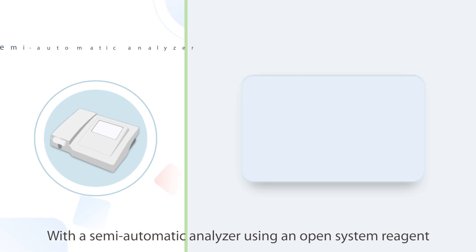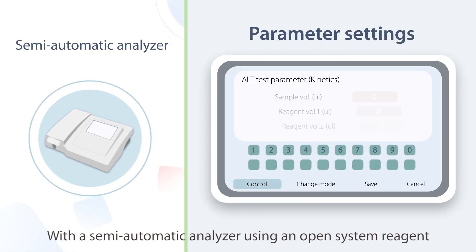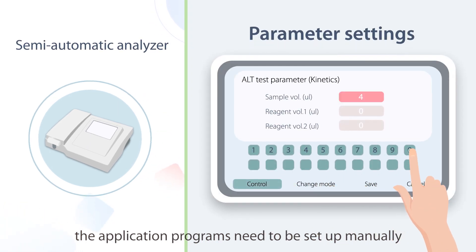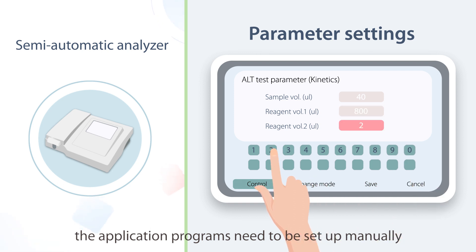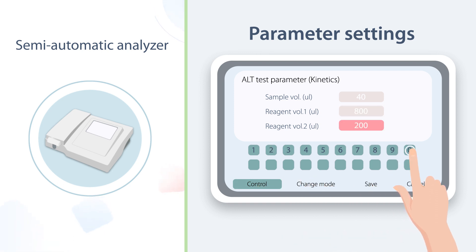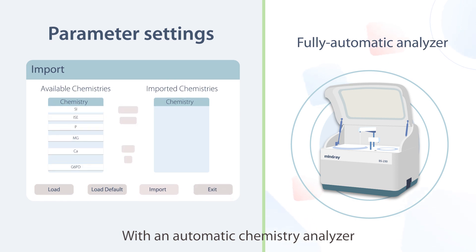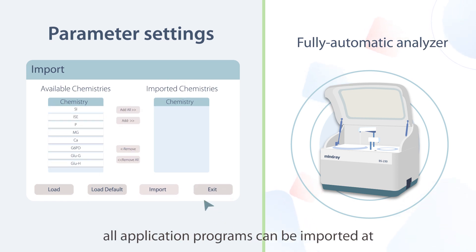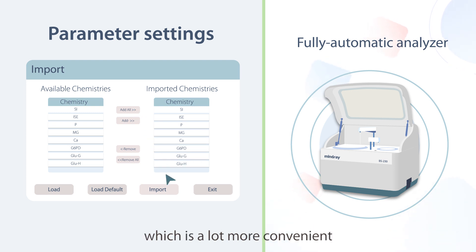With a semi-automatic analyzer using an open system reagent, the application programs need to be set up manually. With an automatic chemistry analyzer, all application programs can be imported at the click of a button in the software program, which is a lot more convenient.